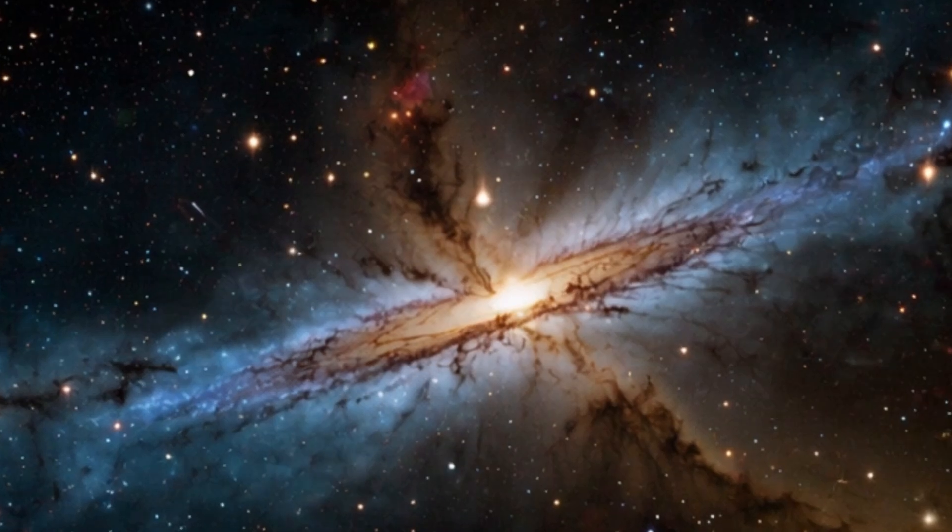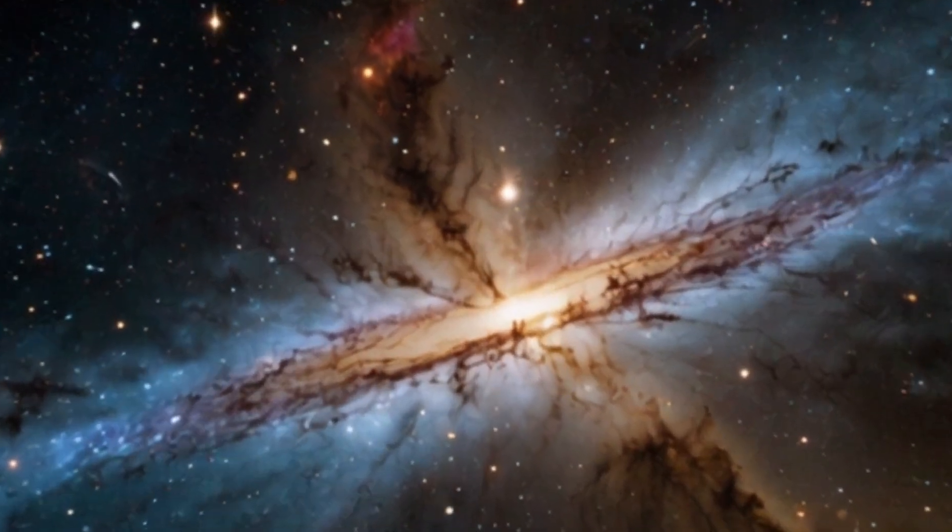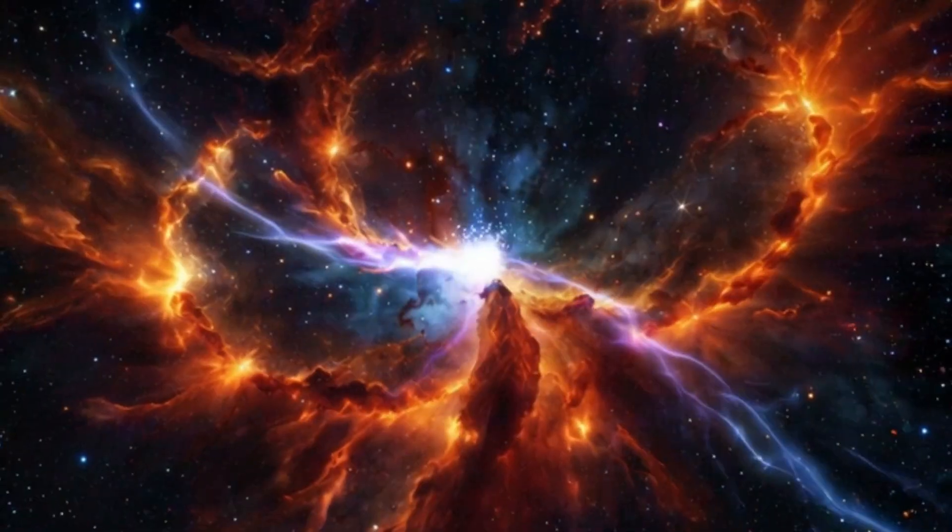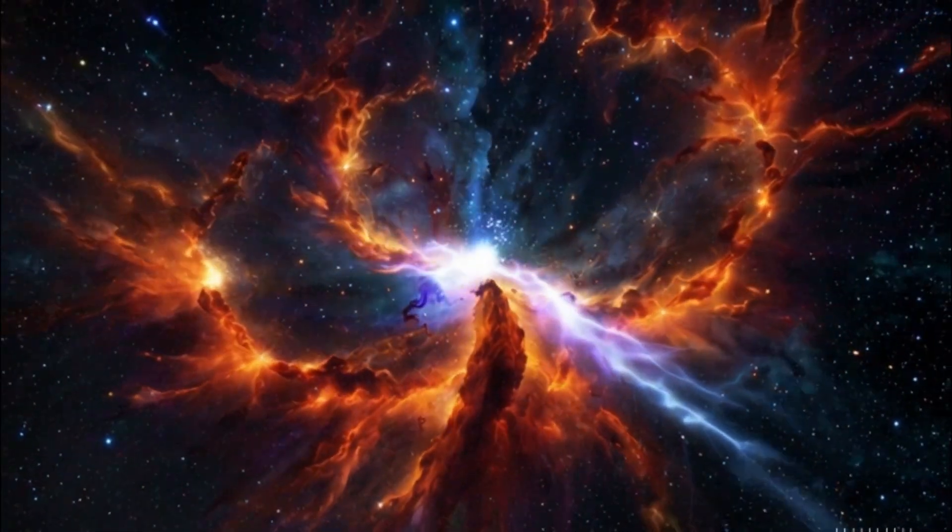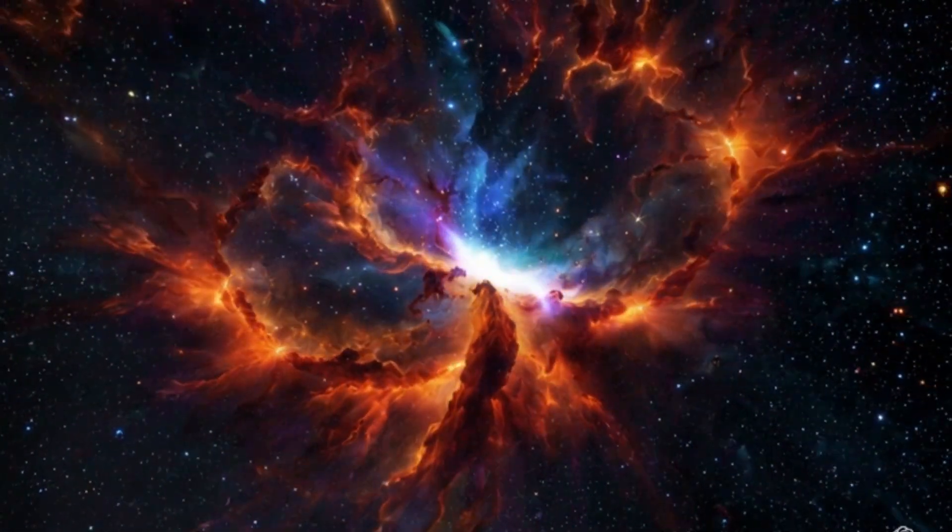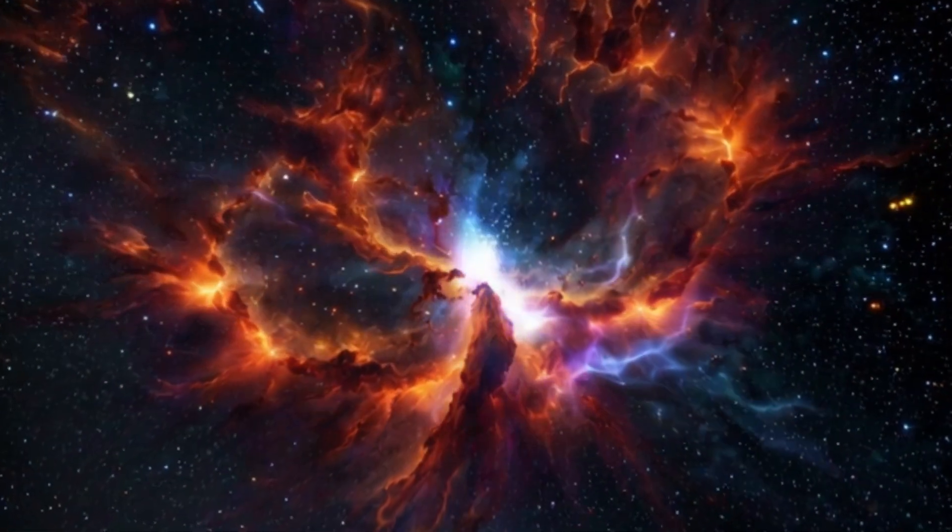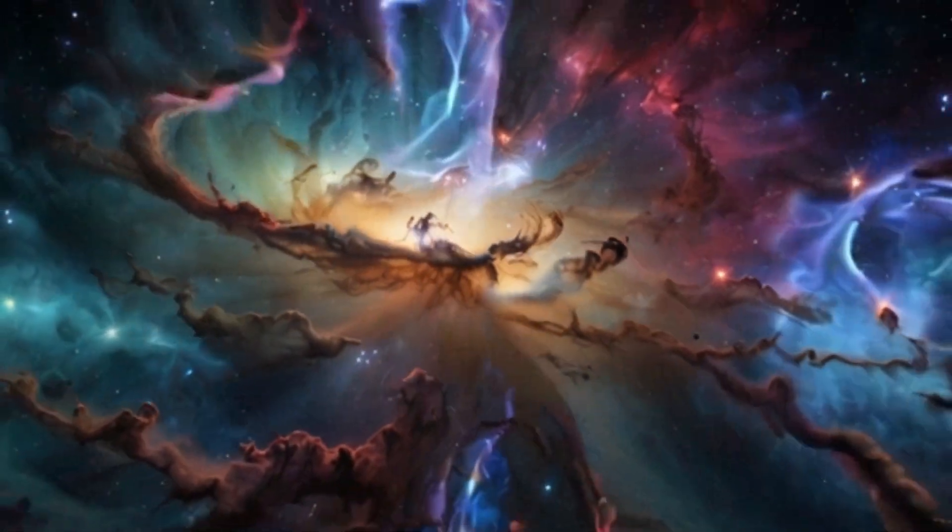Unlike Ton 618, Phoenix A doesn't scream its presence across space with violent radiation. Instead, it lurks in the shadows, quietly allowing gas to cool, collapse, and form stars at an unprecedented rate.